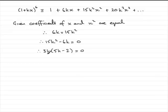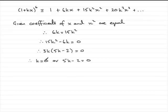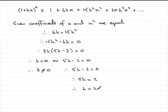And now you could put each of the factors equal to 0. You've therefore got either k equals 0 or 5k minus 2 equals 0. Now we're told that k is a positive value, not equal to 0. So we can say k does not equal 0. Therefore 5k minus 2 equals 0. Add 2 to both sides: 5k equals 2. Divide by 5: k equals 2 fifths.